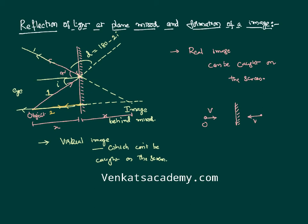Therefore, if somebody asks what is the relative velocity of the image with respect to the object, or the object with respect to the image, you can say v minus minus v because both of them are in opposite directions. Its value is nothing but equal to 2v. This is the basics of reflection.